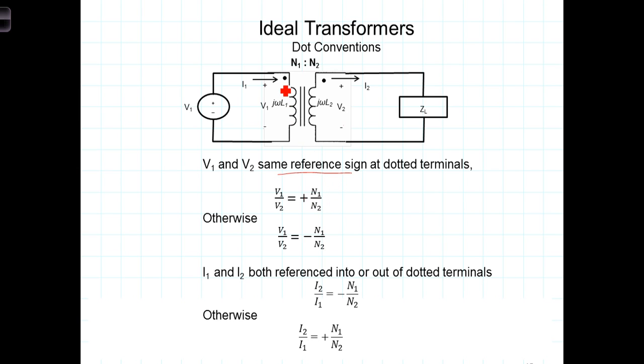If one of them was positive at the dot and the other was negative at the dot, then V1 and V2 would be of opposite signs. With the current, if both I1 and I2 are referenced into the dot, or are both referenced out of the dot, I1 and I2 will be of opposite signs.